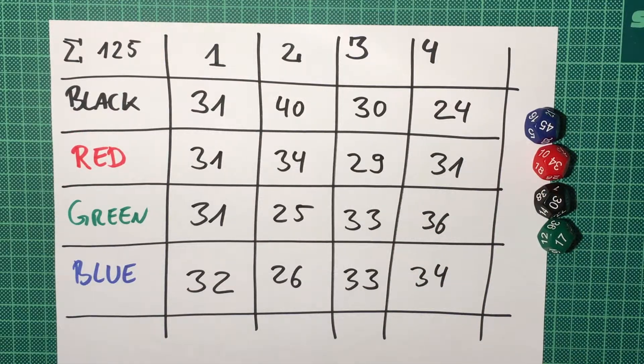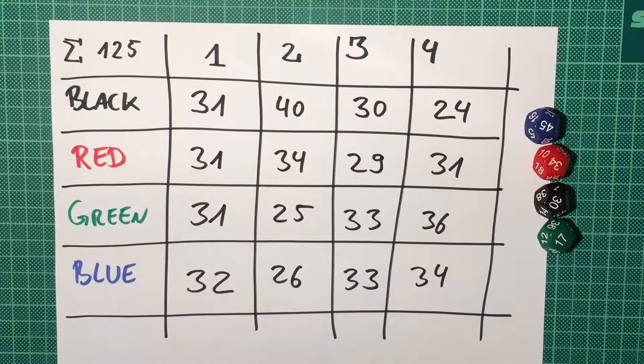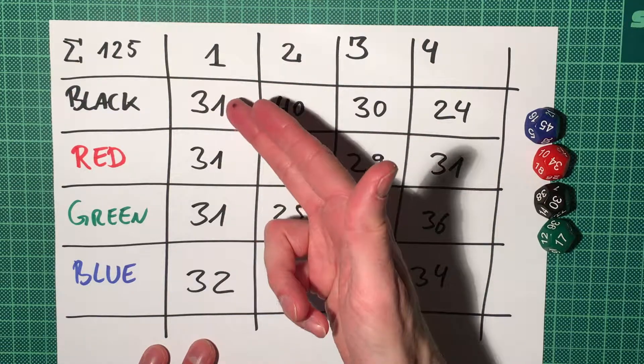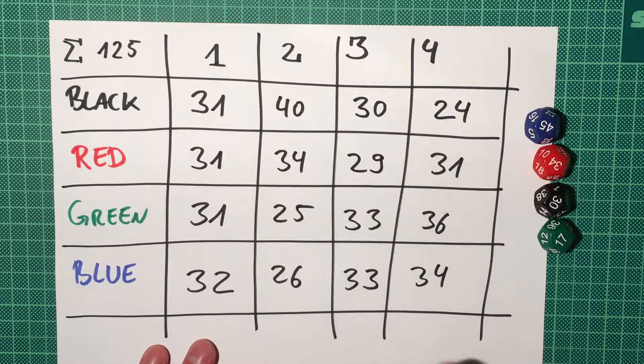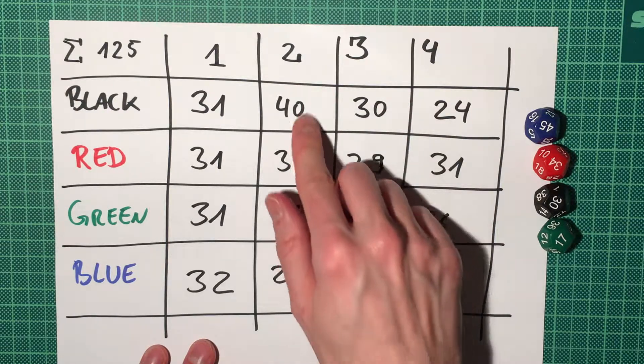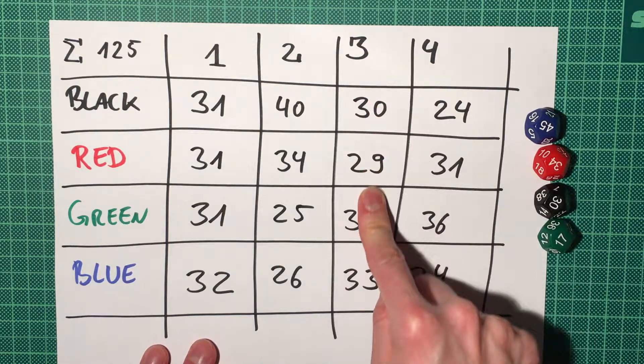All right, here's the end result. I actually did 125 rolls, which is pretty nice. And black, red, green, and blue came in first relatively fair, 31 to 32. Second place was, in my run at least, biased a bit towards black.